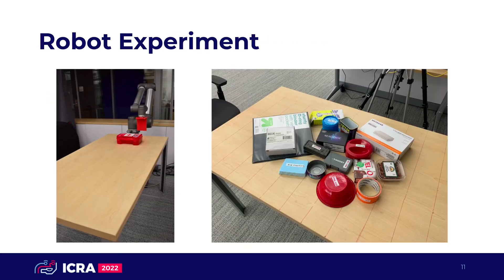We also evaluate IDA on a real-world robot task. The goal is to slide unseen objects to specified locations on the table. We collect a dataset of 20 slides for 27 trained objects and learn both an IDA model as well as a domain randomized model.